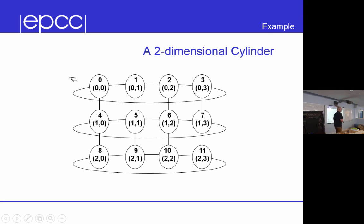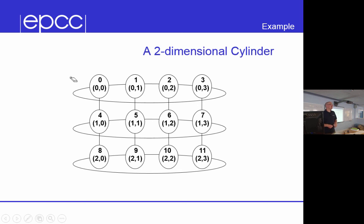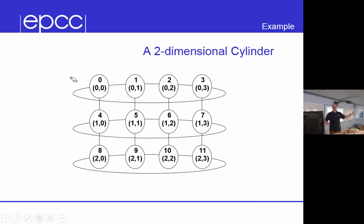We did some work on a plasma code with some colleagues from York and Cullum, and they reduced their efficiency at 8,000 processes from 2% to 80%, purely because they were doing collective communications across all 8,000 processes but most of them were sending zeros. By constructing smaller communicators, only the people actually involved in a calculation send that bit of data, which massively reduces the data being sent and parallel performance becomes much better.